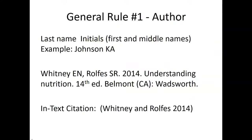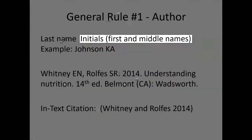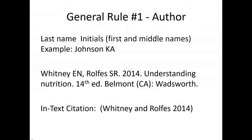There are some general rules for a CSE citation that distinguish it from other citation styles. The general rule for author is to include the full last name, but the author's first and middle names are listed with initials only, which you can see in the Johnson example. When you have more than one author, separate the authors with a comma, as can be seen with the Whitney and Rolfes example.